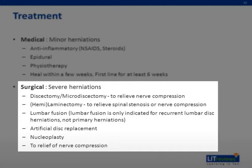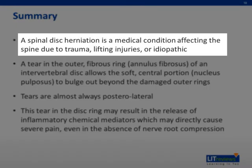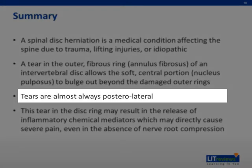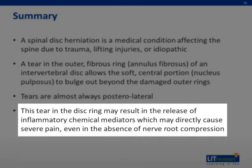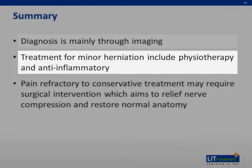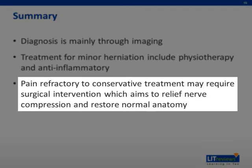In summary, spinal disc herniation is a medical condition affecting the spine due to trauma, lifting injuries, or idiopathic causes. A tear in the annulus fibrosus allows the nucleus pulposus to bulge out beyond the damaged outer rings — tears are almost always posterolateral. This tear may release inflammatory chemical mediators causing severe pain even without nerve root compression. Diagnosis is mainly through imaging, medical treatment including physiotherapy and anti-inflammatory drugs is first-line for minor herniation, and pain refractory to conservative treatment may require surgical intervention to relieve nerve compression and restore normal anatomy.